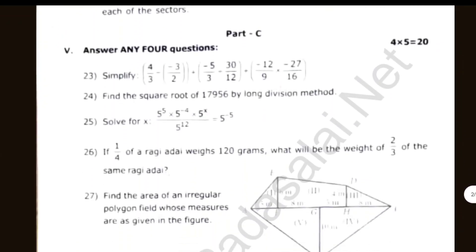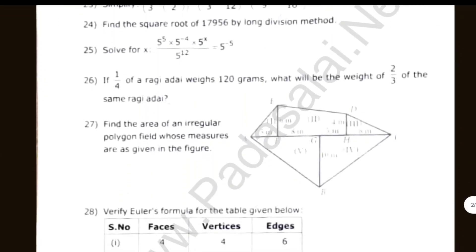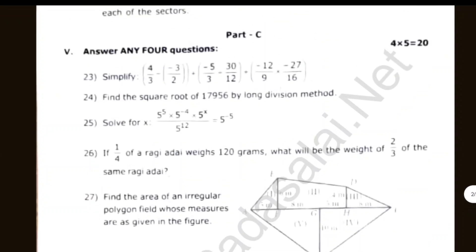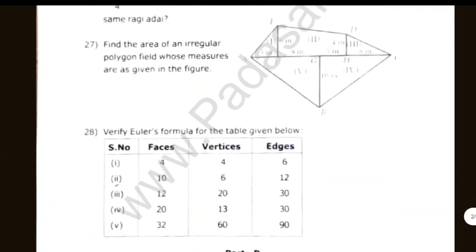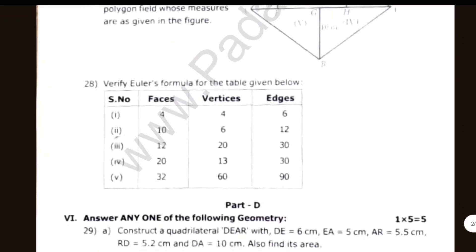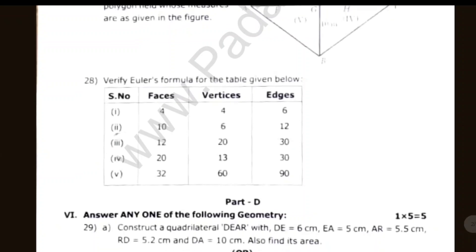If you have 5 marks, you can put it in part 2. Simplify and find the square root. Solve and find the irregular polygon field — all the measurements are as given in figure 28. Verify the Euler formula for the table. It is very simple.